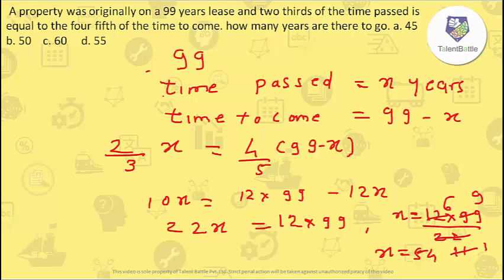So the time past is 54 years. And what they have asked is how many years are there to go. Time to come is nothing but 99 minus X. The value of X is 54, so 99 minus 54 is 45. Still 45 years are there to go. So the answer for this question will be option A.